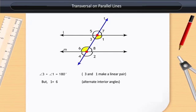Therefore, we can say that the measure of angle 3 and angle 6 is also equal to 180 degrees.